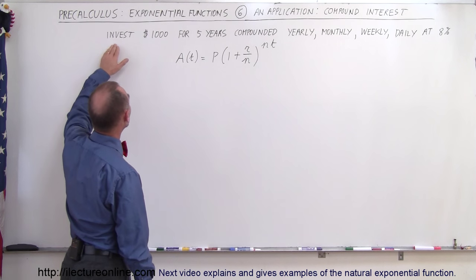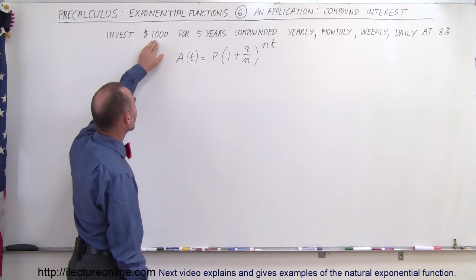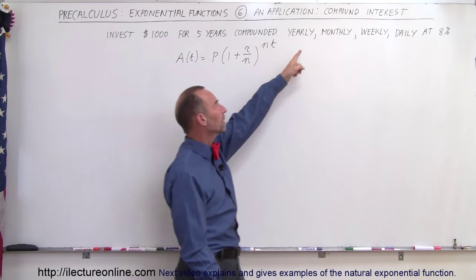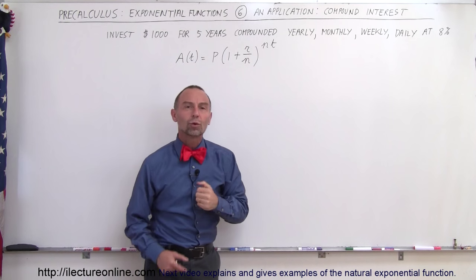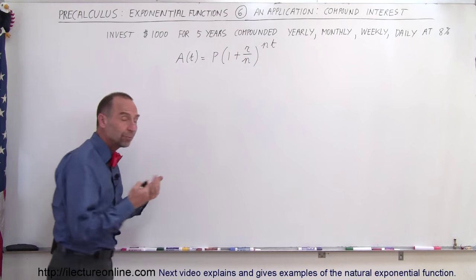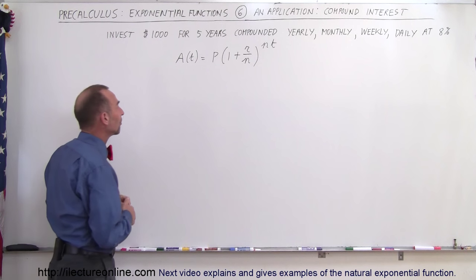And here the problem reads that we invest $1,000 for 5 years compounded either yearly, monthly, weekly or daily at 8% interest. How much will the eventual amount be that we accumulate with this type of investment?